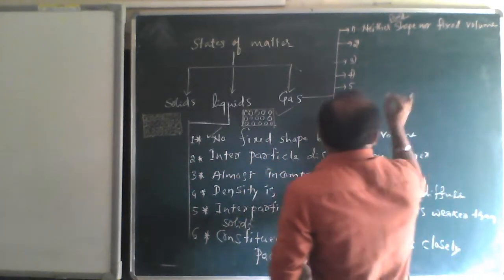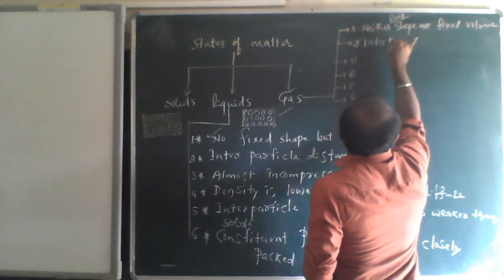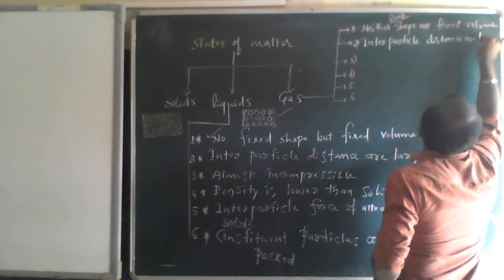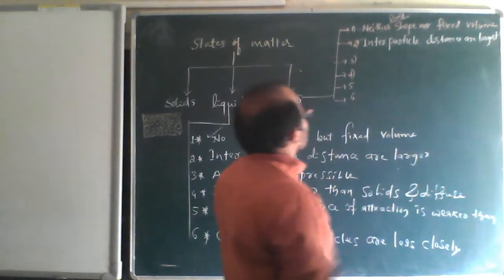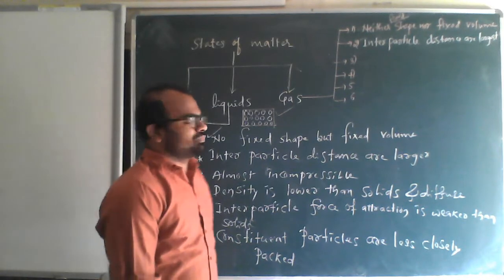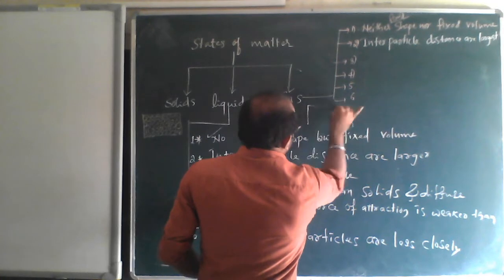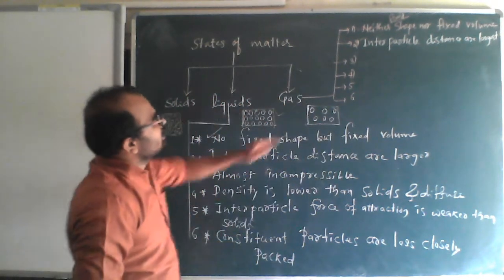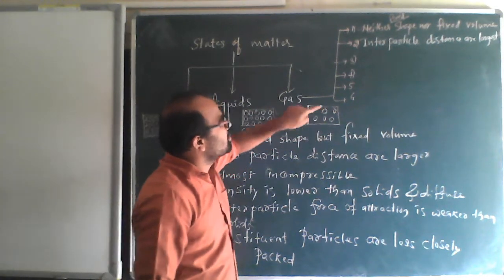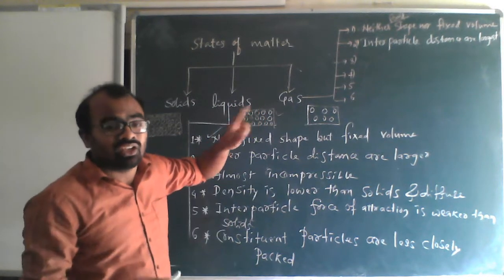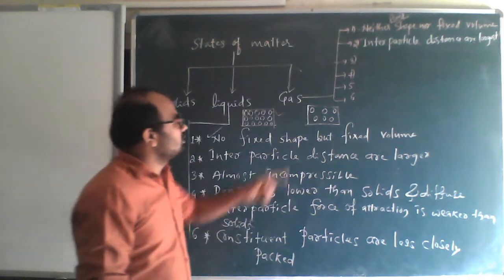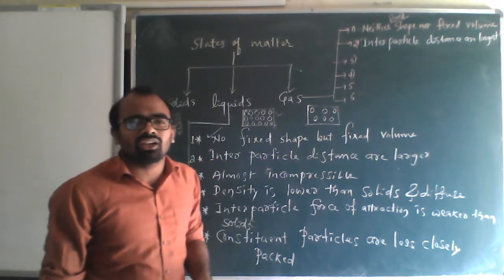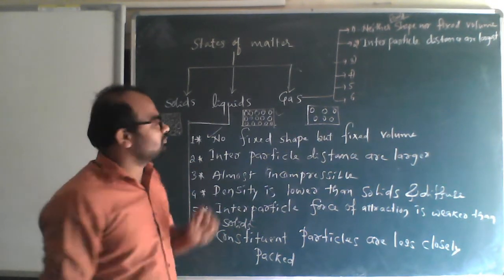Second property of gases: interparticle distance is the largest. In the gas molecule structure, the interparticle distance is the most. Since interparticle distance is largest, particles are very much less closely packed, and the force of attraction between particles is very small.